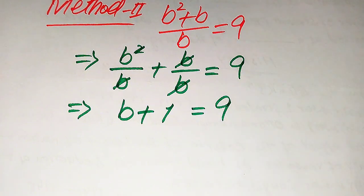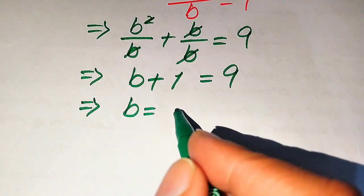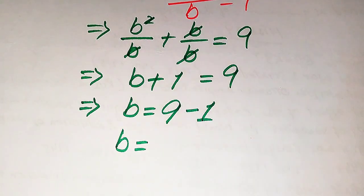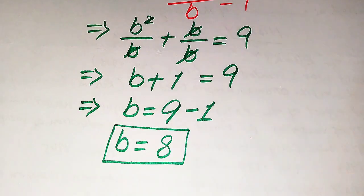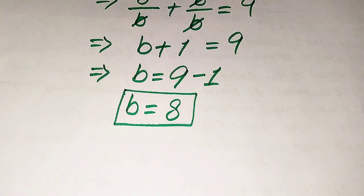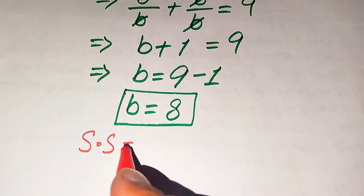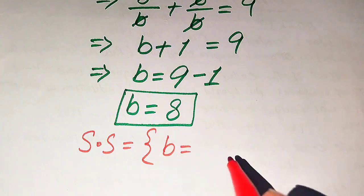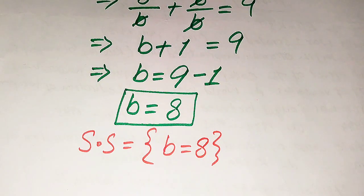Moving the plus 1 to the right-hand side gives b equals 9 minus 1, so b equals 8. In the second method we get only one root: b equals 8. As verified in the first method, b equals 8 satisfies the given equation. Both methods give the same solution set. The final answer is b equals 8. Thank you so much for watching — please subscribe to my channel for more videos.